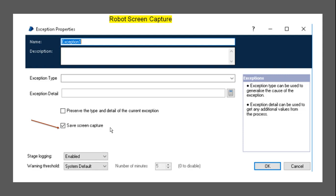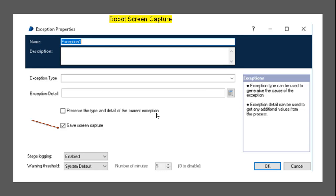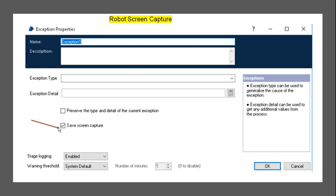What is the benefit of save screen capture? In the previous version of Blue Prism, when a production process threw an exception, it was sometimes difficult to determine the reasons without seeing what was happening on the screen. Now, to view the exception record, Blue Prism has enhanced exception troubleshooting by allowing screen capture when the exception is thrown. The image is stored in the Blue Prism database, and the screen capture feature must be enabled in the system settings checkbox.